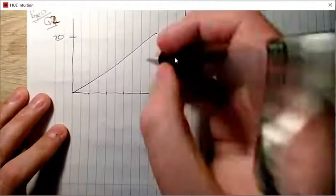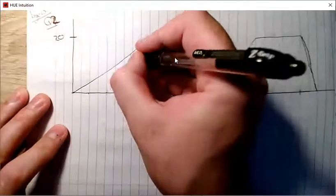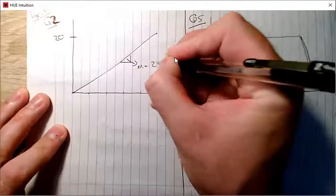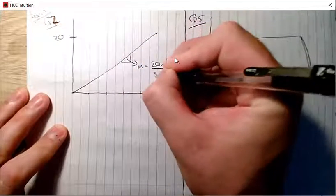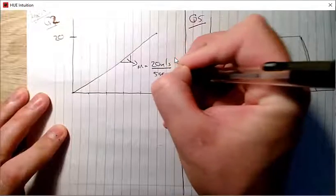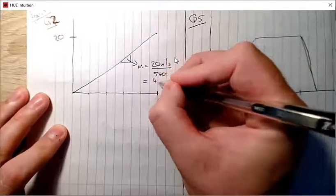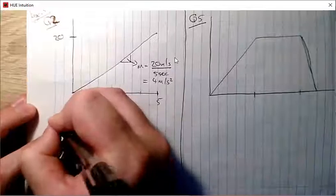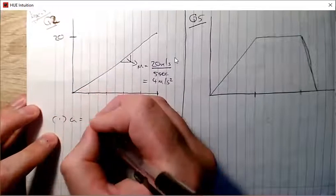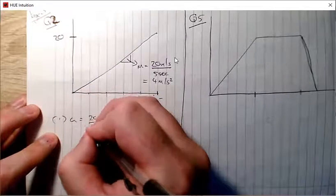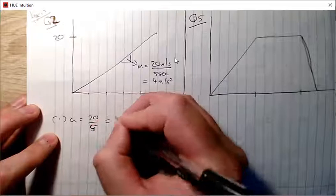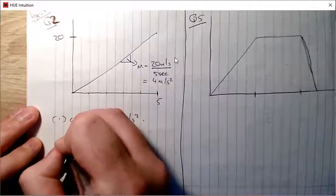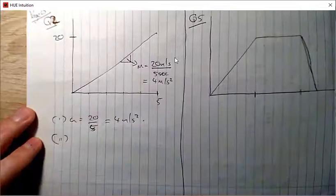Now calculate the acceleration. Using rise over run, the slope is a rise of 20 meters per second over a run of five seconds, giving four meters per second squared. So the acceleration is four meters per second squared.